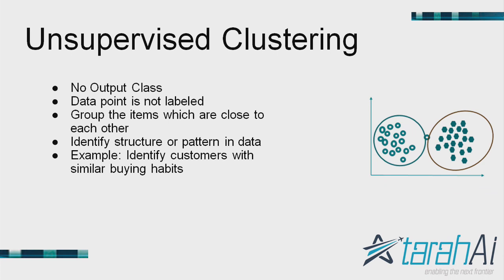Words with different spellings but similar meanings can be grouped together because of a deep learning mechanism called word embeddings. This same infrastructure that was originally used for structured data can now be extended to work with unstructured data as well.